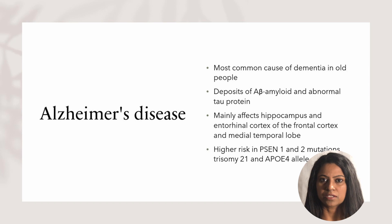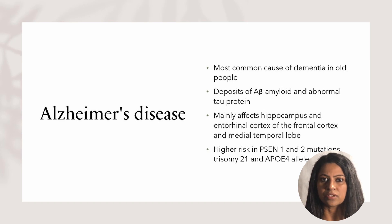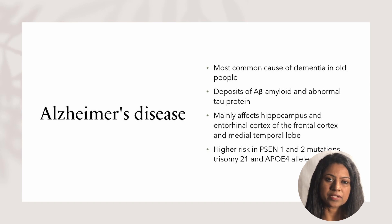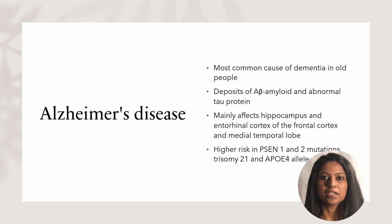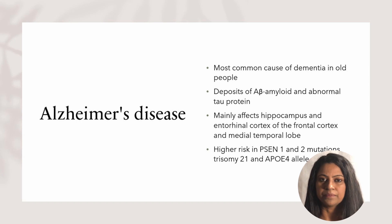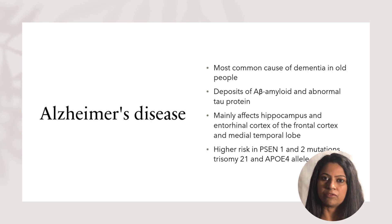Alzheimer's disease is the most common cause of dementia in all people. It is characterized by the deposition of A-beta amyloid and an abnormal tau protein in the neurons, which is toxic to the neurons and leads to apoptosis and neuronal cell death. As a result, levels of acetylcholine reduce in the brain. Characteristic changes are seen in the hippocampus and entorhinal cortex of the medial temporal lobe and the frontal lobe. It is associated with mutations in the presenilin genes 1 and 2, an increased risk with the presence of the ApoE4 allele, and in patients who have Down syndrome.